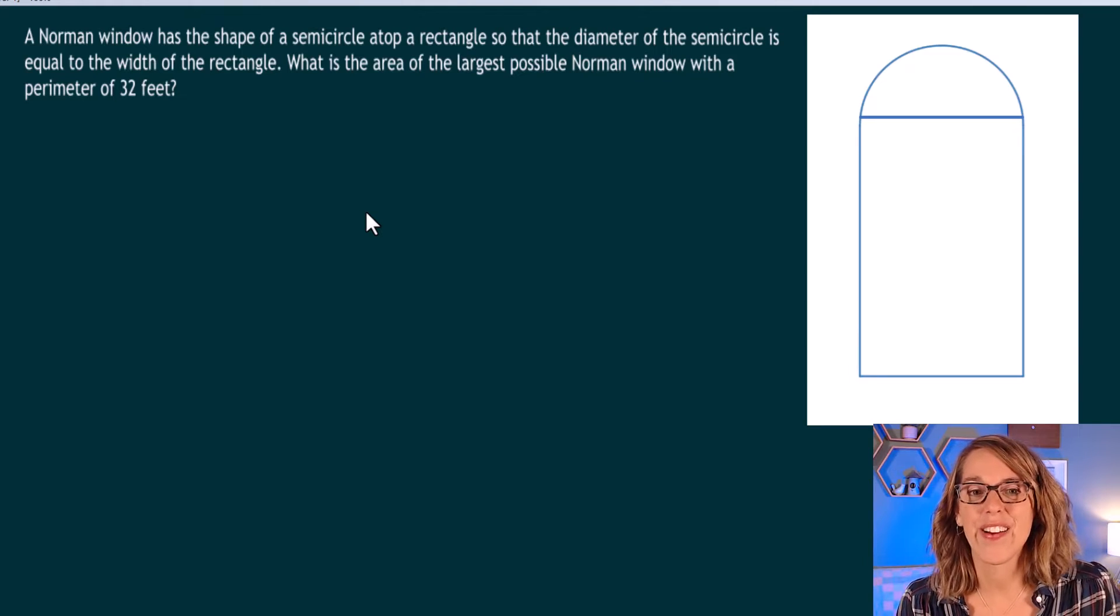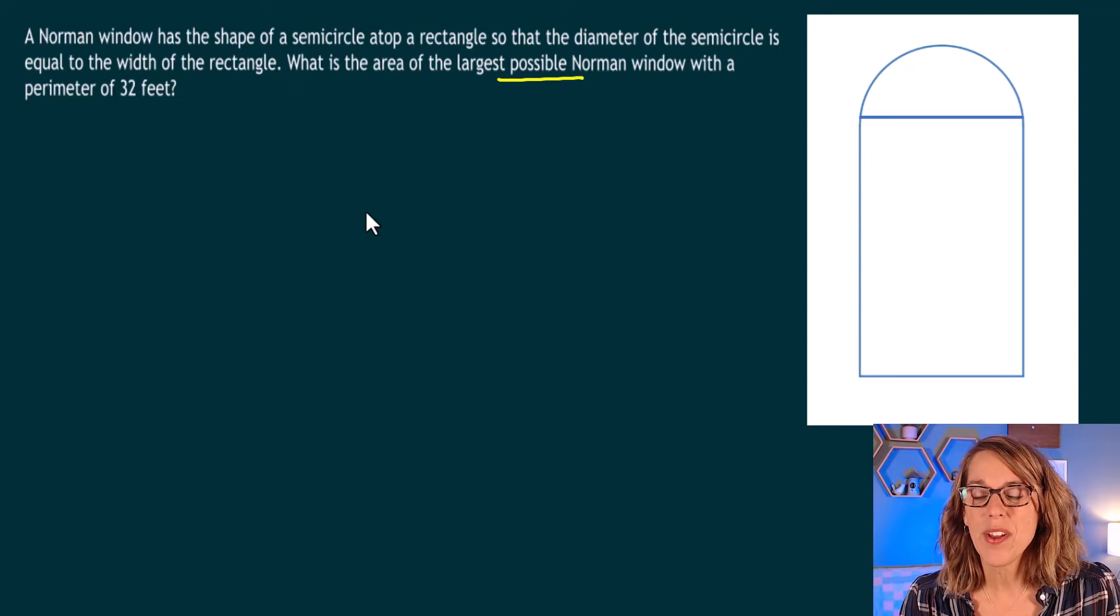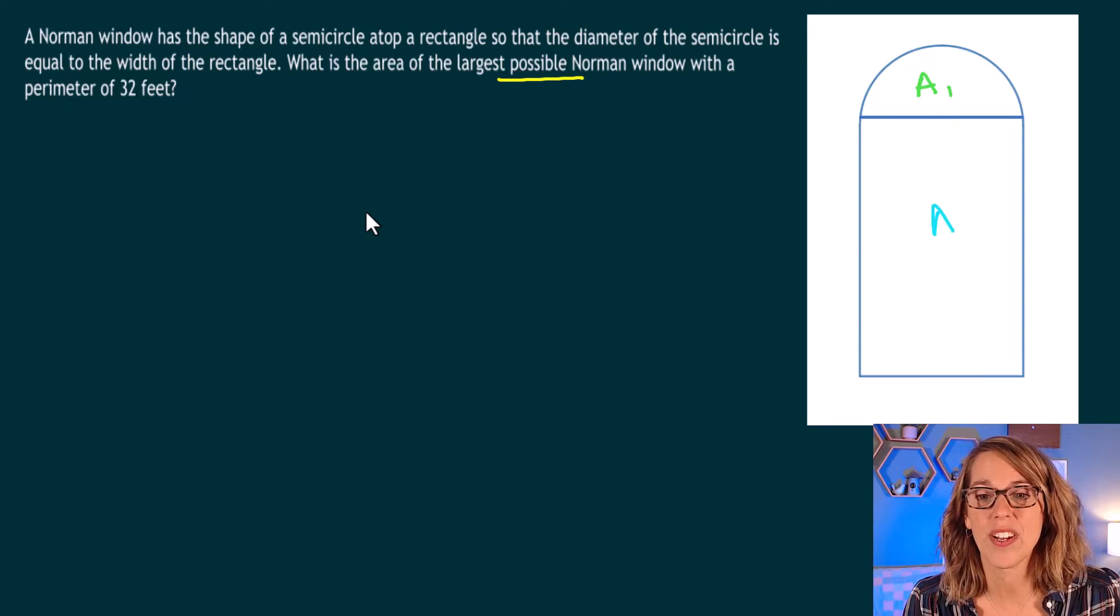We are going to optimize the area of this window, and this window is made up of two different sections. The top section is a semicircle, so we're going to call this area one, and the bottom section is a rectangle. We're going to call that guy area two.